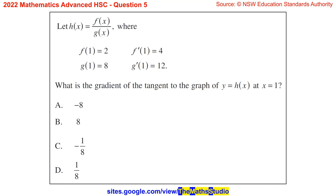Question 5. Let h of x equal f of x over g of x, where f of 1 equals 2, f dash of 1 equals 4, g of 1 equals 8, and g dash of 1 equals 12. What is the gradient of the tangent to the graph of y equals h of x at x equals 1?